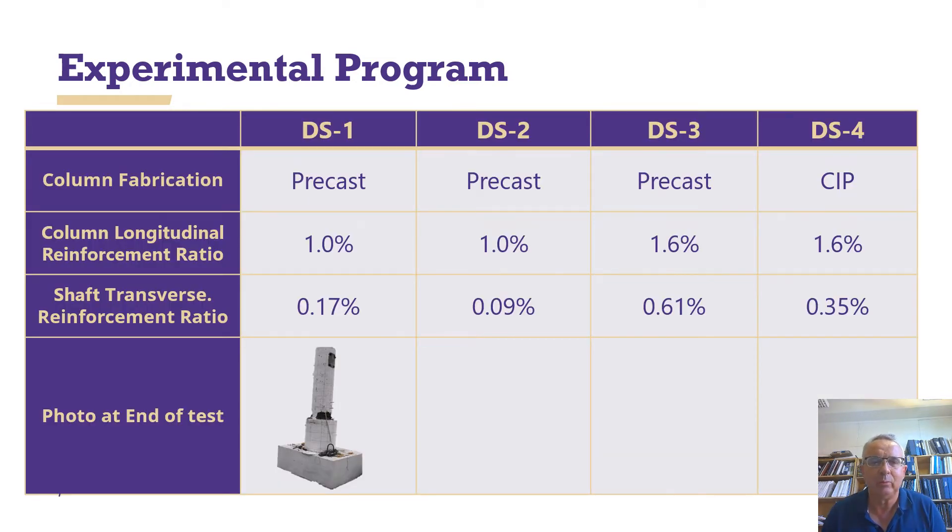Now in the first one, we call that DS1. We use a precast specimen, trying to build things quickly. We provided a pretty much minimum reinforcement ratio of 1% and a transverse reinforcement ratio of 0.17%. So longitudinal reinforcement ratio is the area of column vertical steel divided by the area of the column, which tells you how strong the column is. The shaft transverse reinforcement ratio is the area of transverse reinforcement ratio over the area that it acts, and that gives you a sense of how much transverse reinforcement is trying to hold everything together.